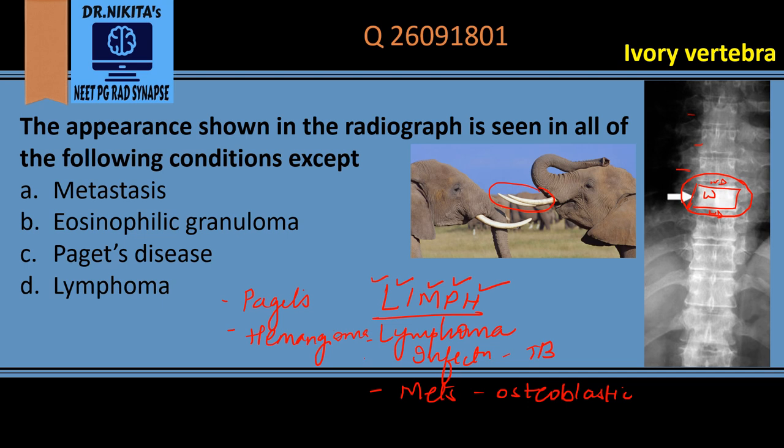We've previously covered important vertebral appearances — there is a link to that video for reference. Here, the answer is eosinophilic granuloma, where we do not see ivory vertebra.